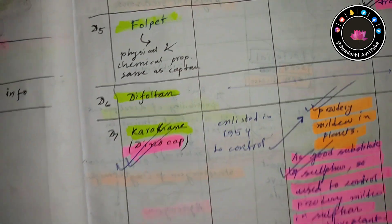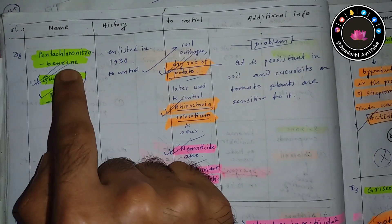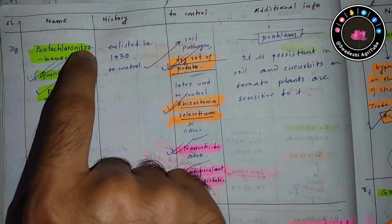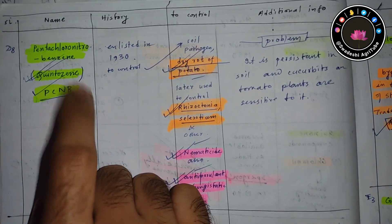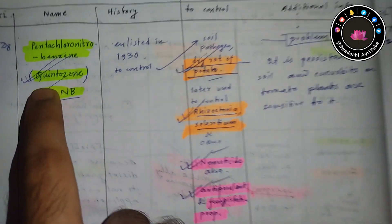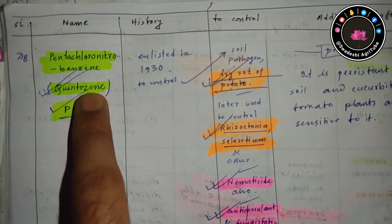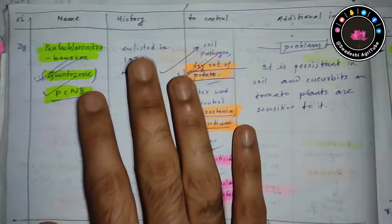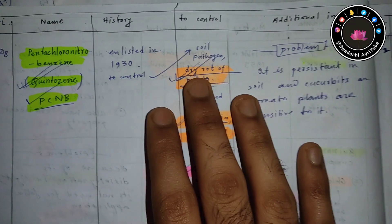It is also known as quintozene. This is very much important because it was firstly used to control dry rot of potato.